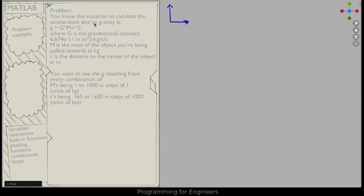Multiplied by m, which is the mass of the object you're being pulled towards in kilograms. And r in that equation is the distance towards the center of the object, so that's divided by r squared.